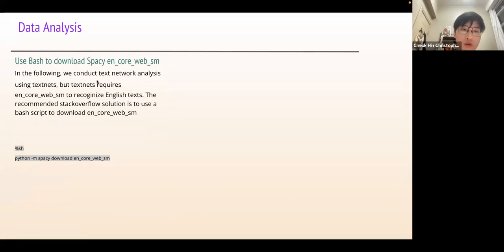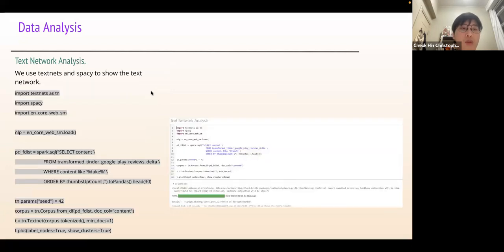We use batch to download core web sm to recognize the English texts. We use TextNet and spaCy to show the text network. The text network is open, so the English is stored in the database local drive.